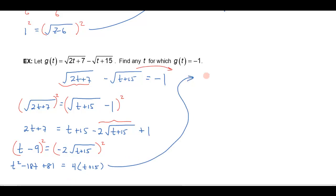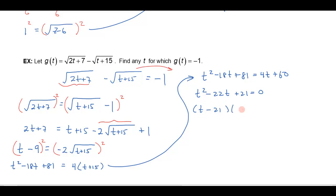So I have t squared minus 18t plus 81 equals 4t plus 60 when I distribute the 4 through. Getting my terms on one side: t squared minus 22t plus 21 equals 0. I can factor that as t minus 21 times t minus 1, so t is either going to be 21 or 1. These are just potential solutions — I have to check and see if both, one, or neither of them is going to work out.